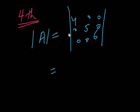For multiplication along the main diagonal: 4 times 5 times 6. 4 times 5 equals 20, and 20 times 6 equals 120.